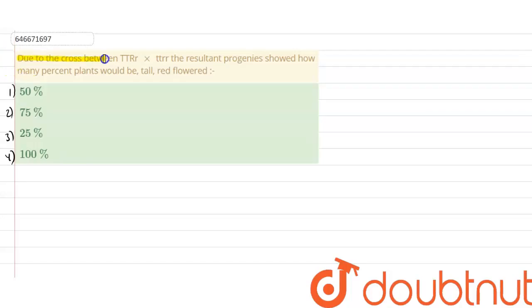Due to cross between TT Rr and tt rr, the resultant progenies showed how many percent plants would be tall, red flower. Option 1: 50%, option 2: 75%, option 3: 25%, and option 4: 100%.